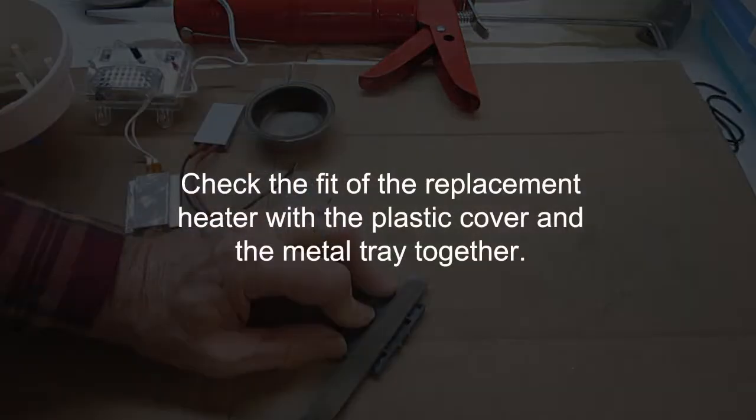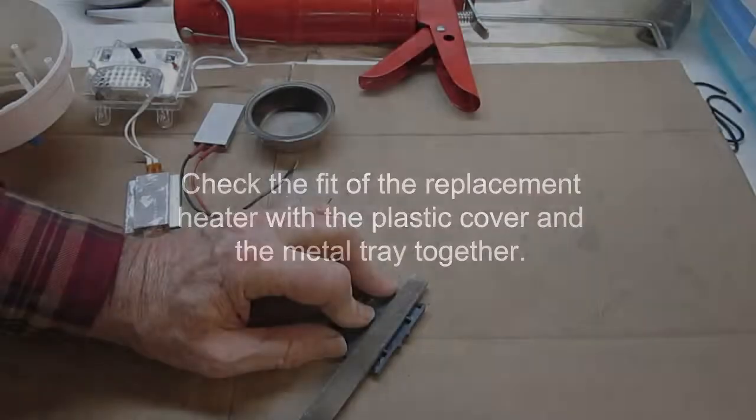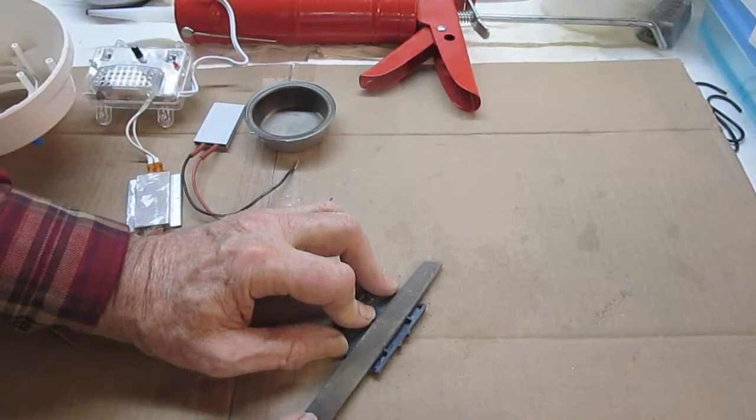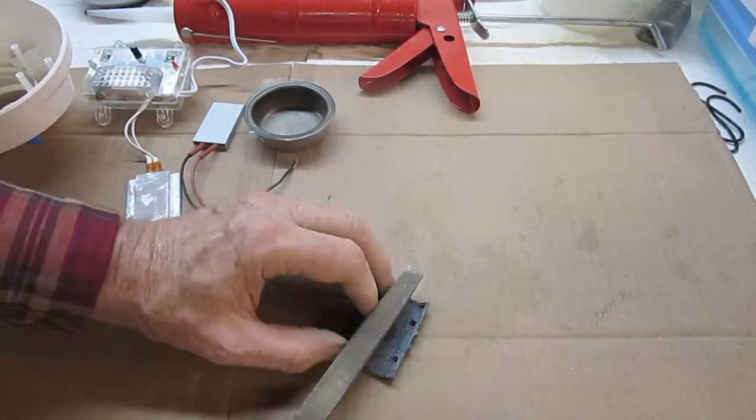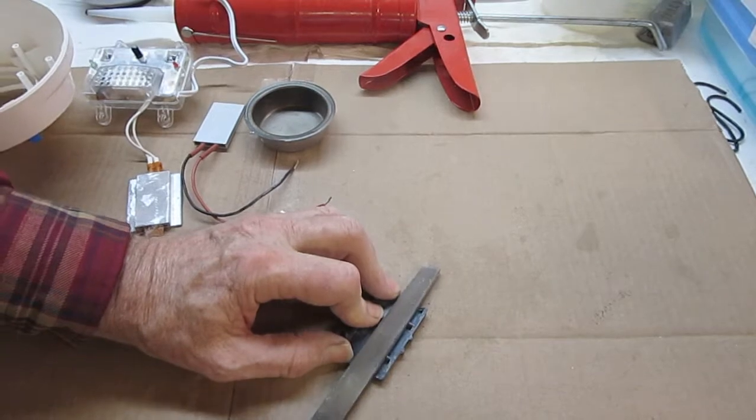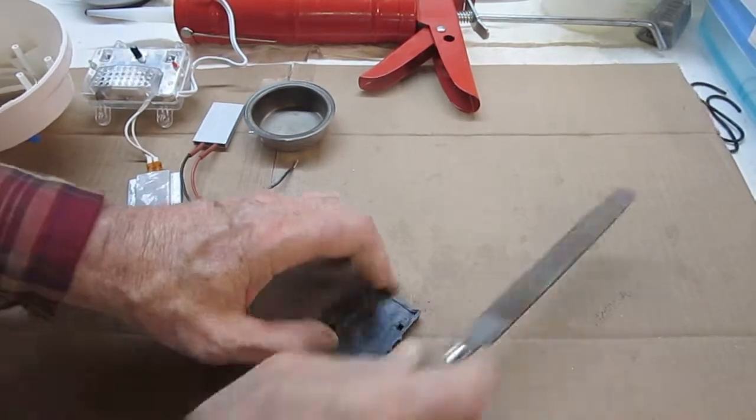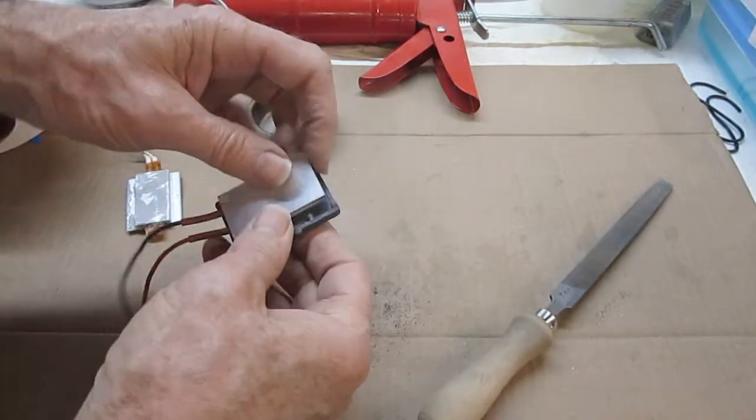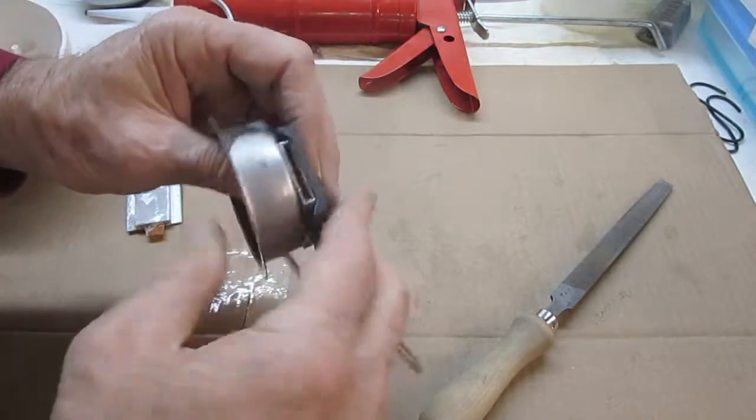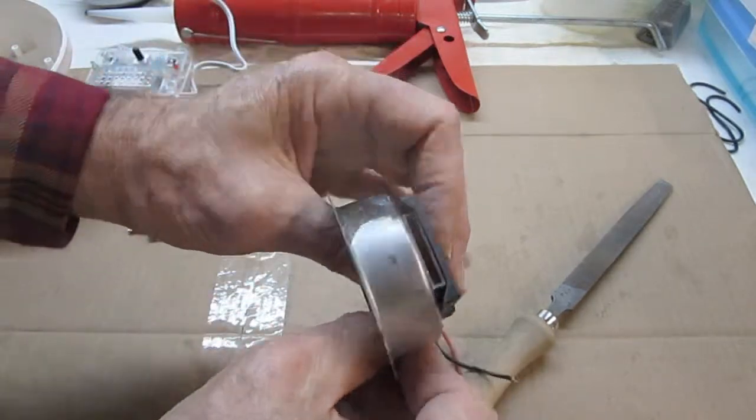Then check the fit of the replacement heater with the plastic cover and the metal tray together. When there is no gap between the plastic cover and the heating element, the filing is complete.